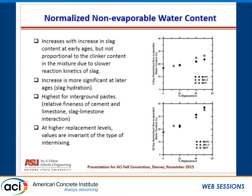Coming on to results from thermal analysis, when we plot the normalized non-evaporable water content, we see that it increases with the increase in slag content at early ages, but it is not proportional to the clinker content in the mixture — that is because of the slow reaction kinetics of slag. The increase in non-evaporable water content is more significant at later ages, attributed to the hydration of slag. Also, the values for the interground systems are much higher than blended systems at early ages, while at 28 days the values are almost invariant of the type of intermixing.